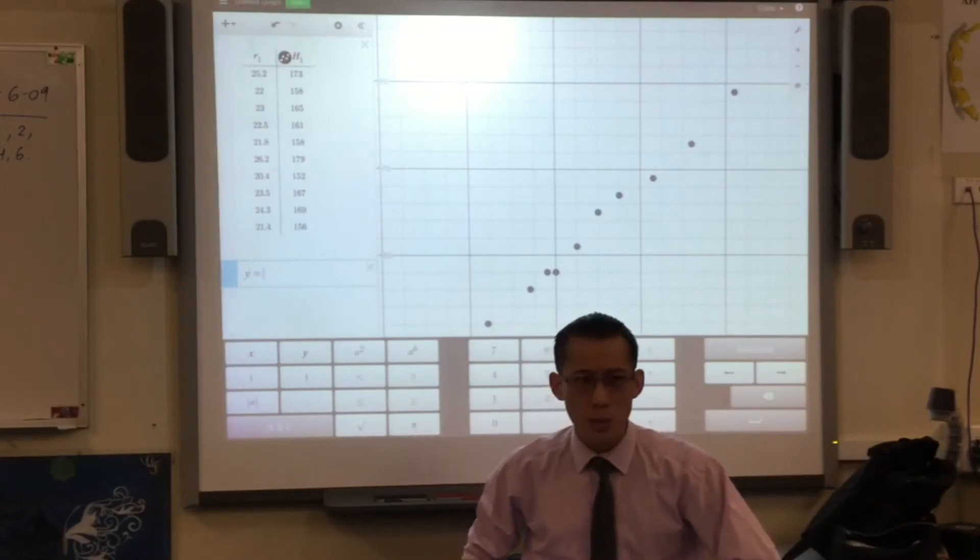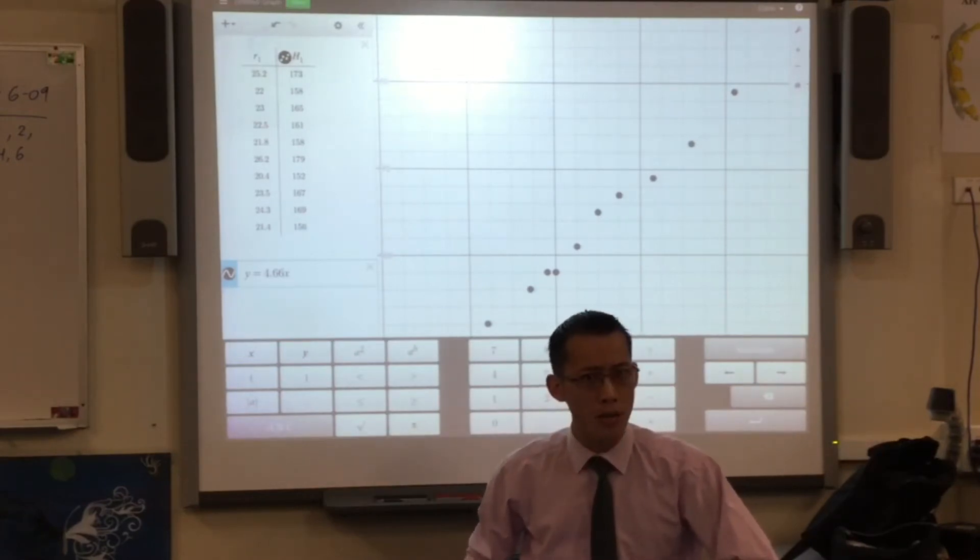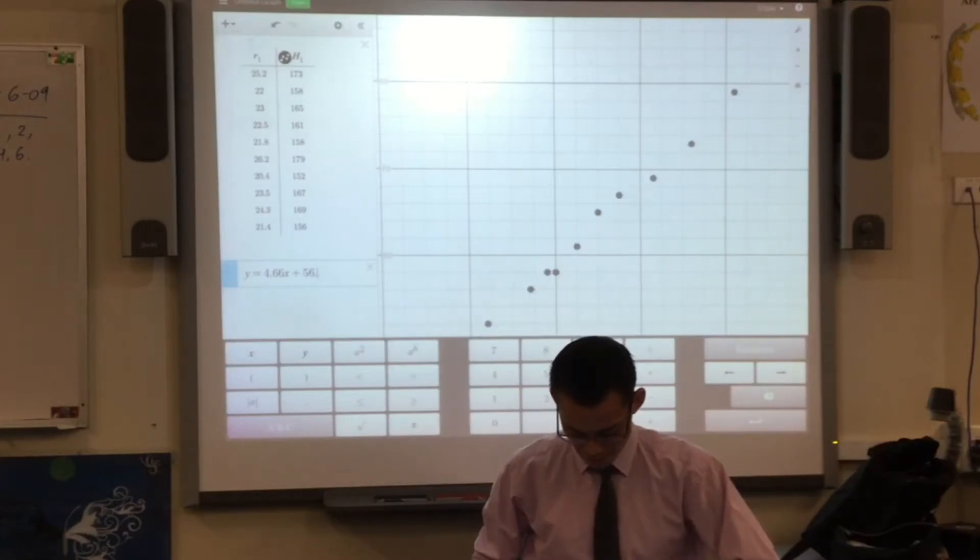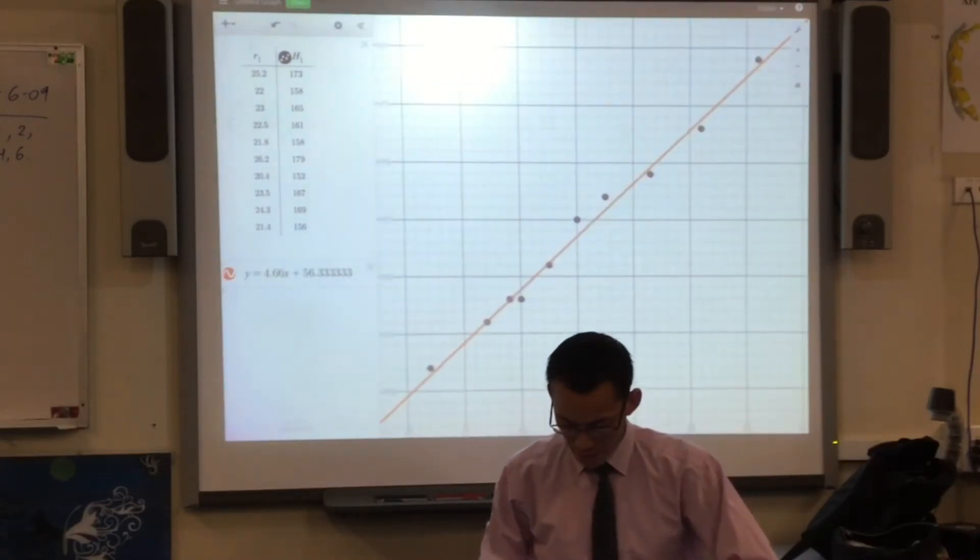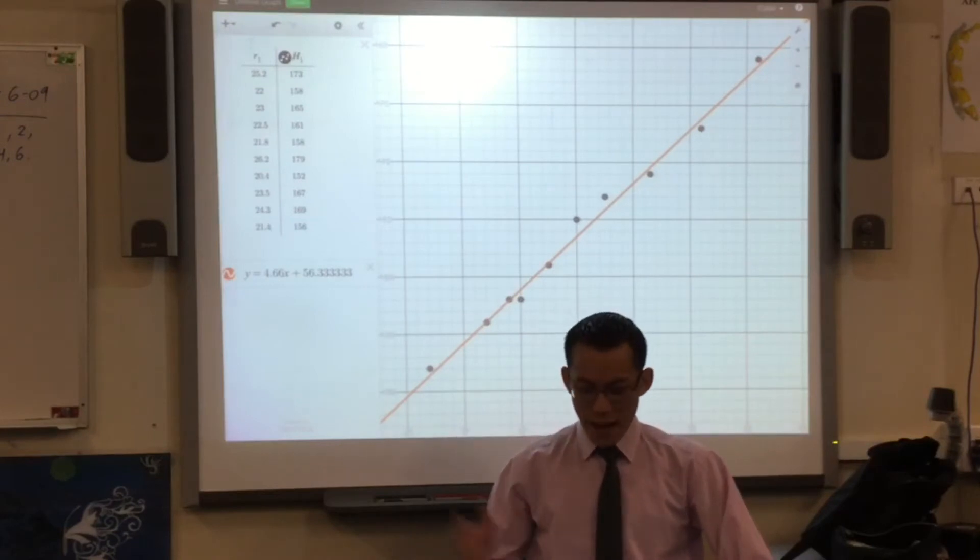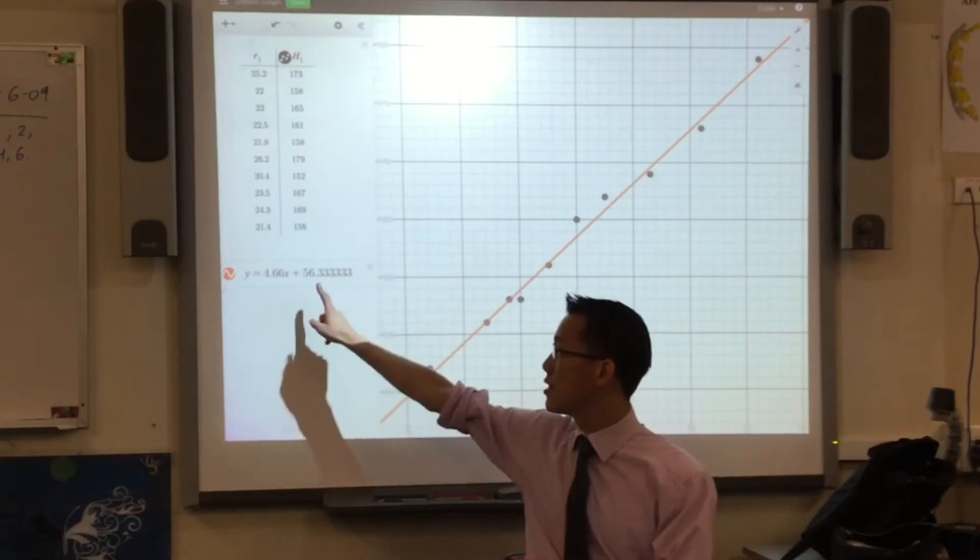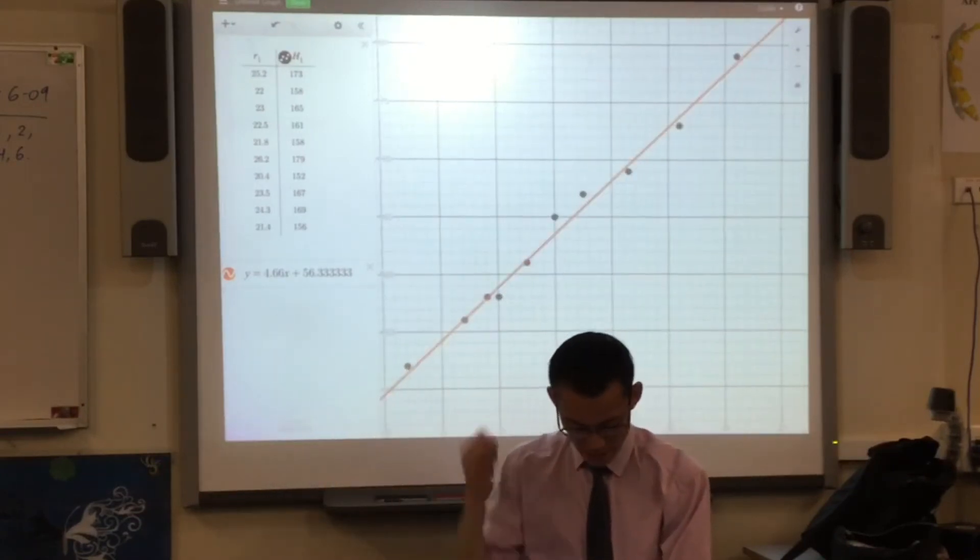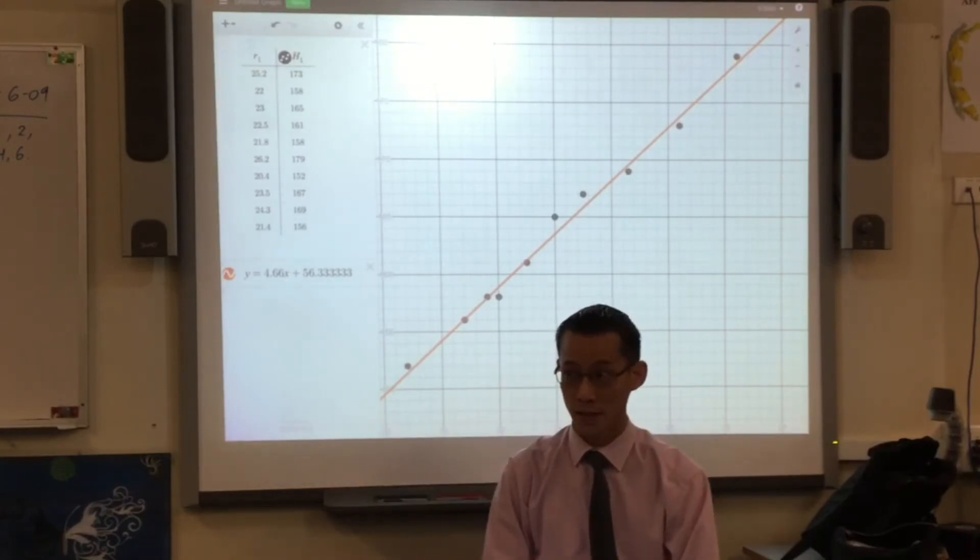So, now I'm going to write in the equation. Can you help me remember? It's y equals 4, I think I wrote 4.66, that's the gradient, x, and then I think it was plus. Plus 56.33. Okay, so, let me just color that a bit better. There we go. All right. So, we've actually looked at that. We've judged it based on our eye, and then we've come out with this equation, and you can actually get software which will, as I've done, verify the fact that you've got an equation that really does fit the data well.